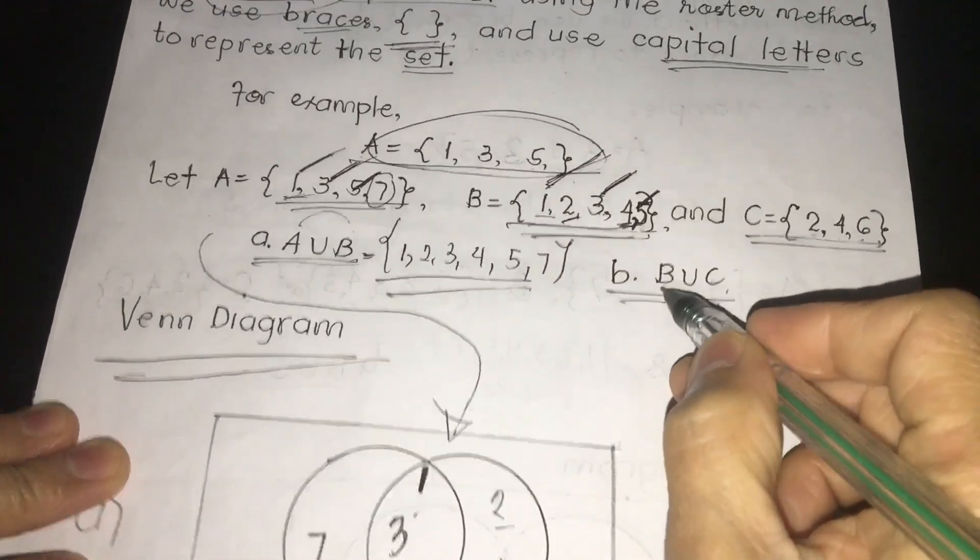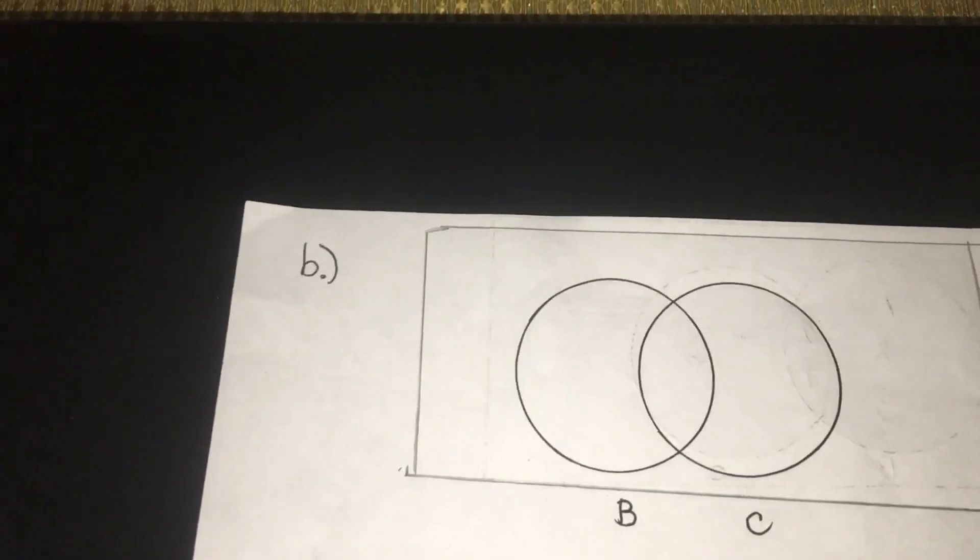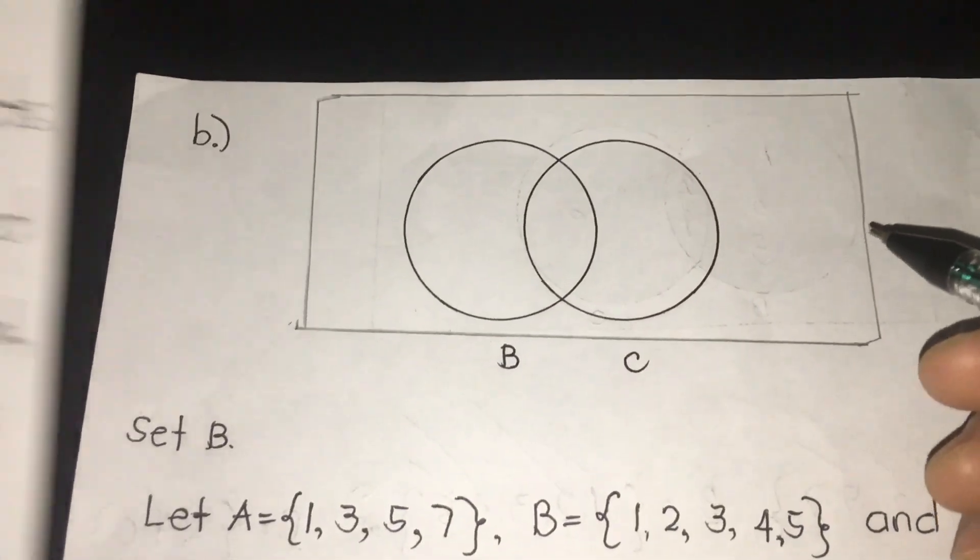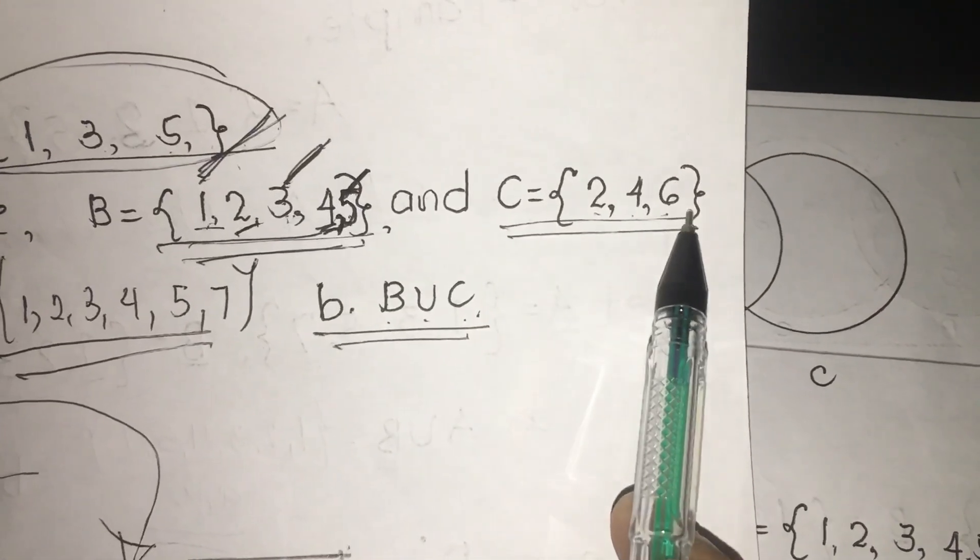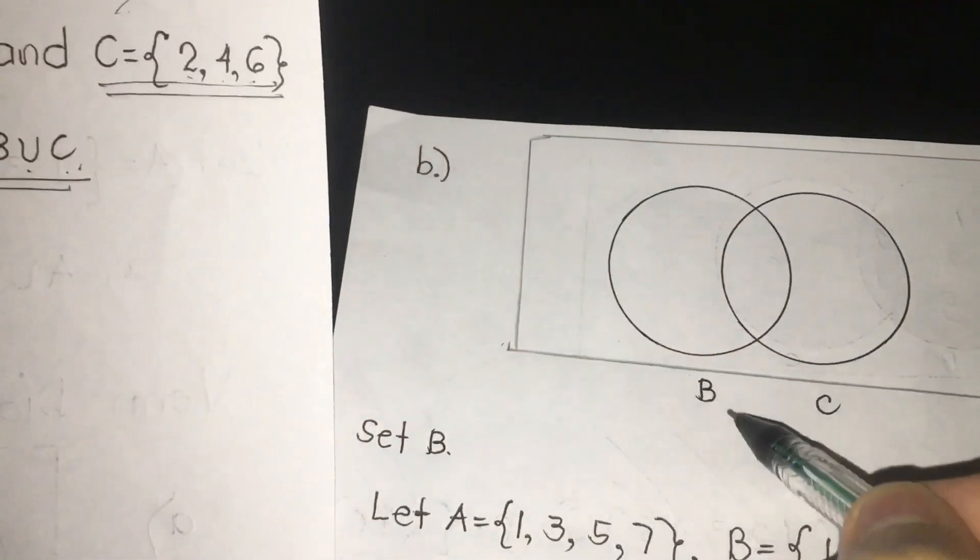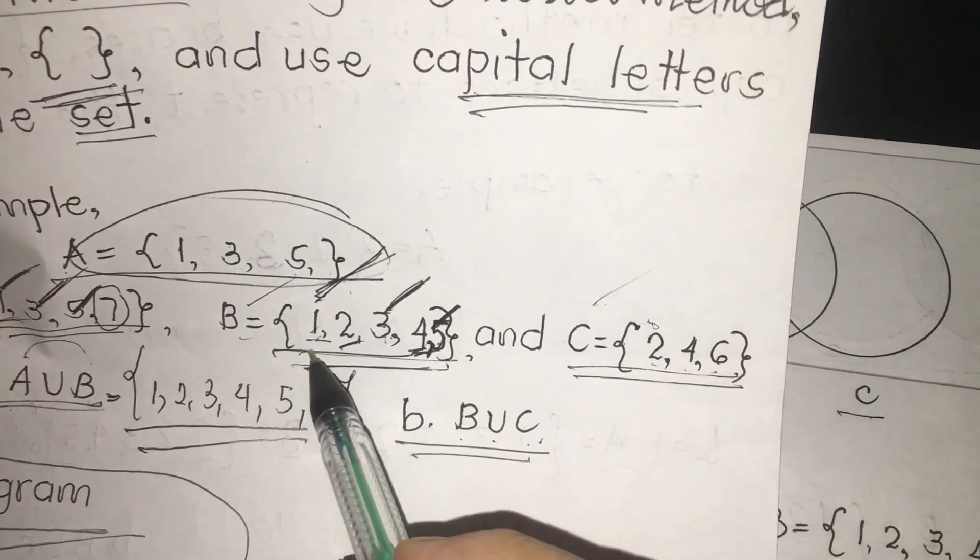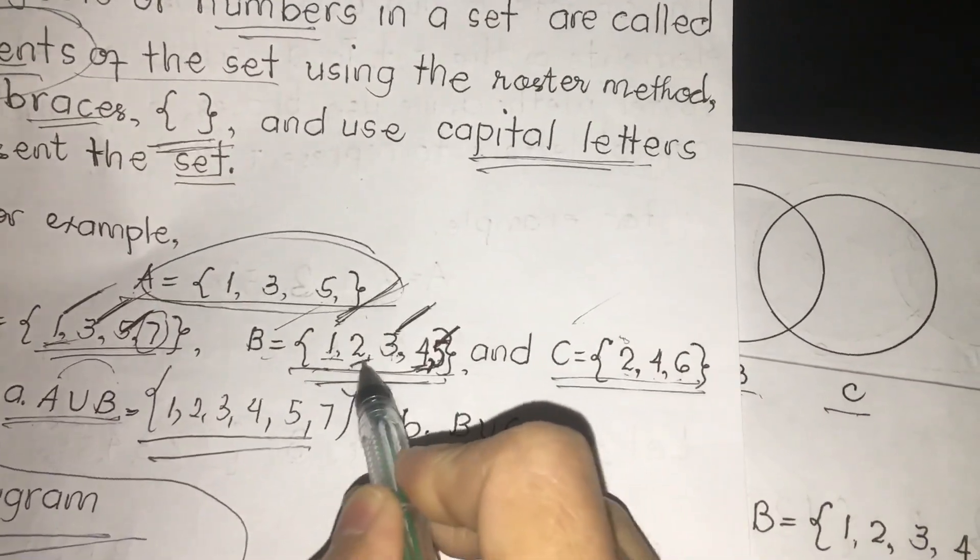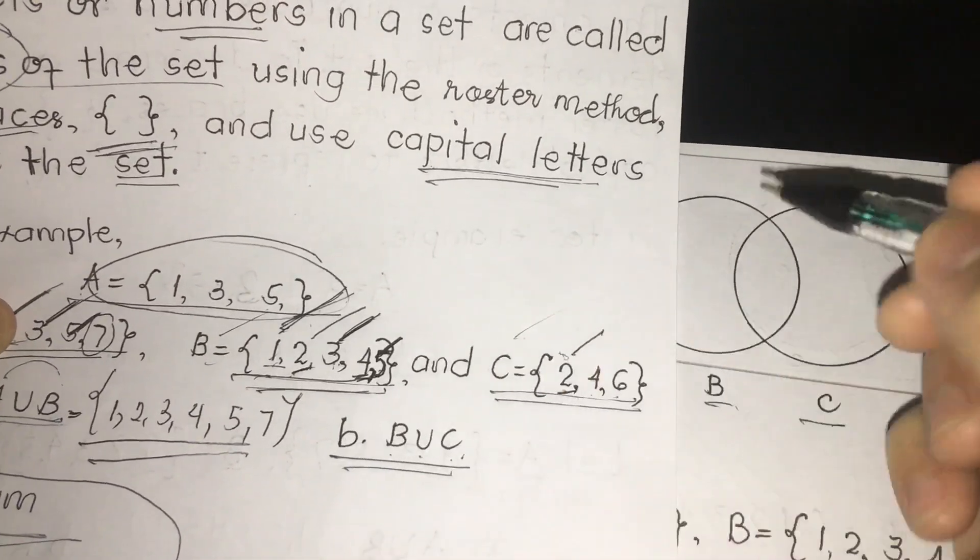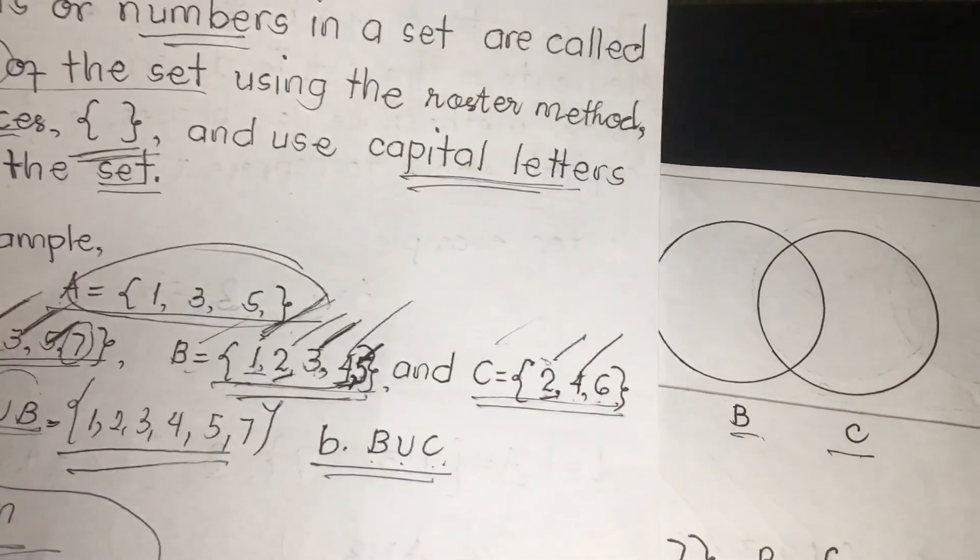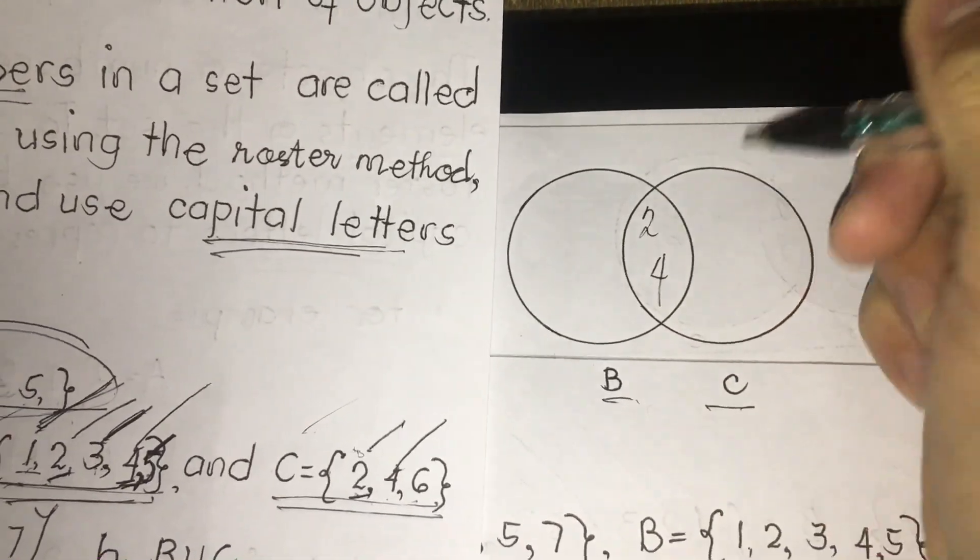In letter B, we're going to proceed to letter B. B is the union of C. We have first here our drawing. Same given. We have in B, we have 1, 2, 3, 4, 5. In C, we have 2, 4, 6. We are going to get the common elements of B and C. So we have first the common. 1, there's no 1 in B and C. There's no 1 here in C. But C, there's no. So we have first 2, and then we have 2 in C. So we're going to put a check. Next, 3, there's no 3 in C. 4, we have common. All we have to do is we're going to write 2 and 4 here at the center of our Venn diagram.